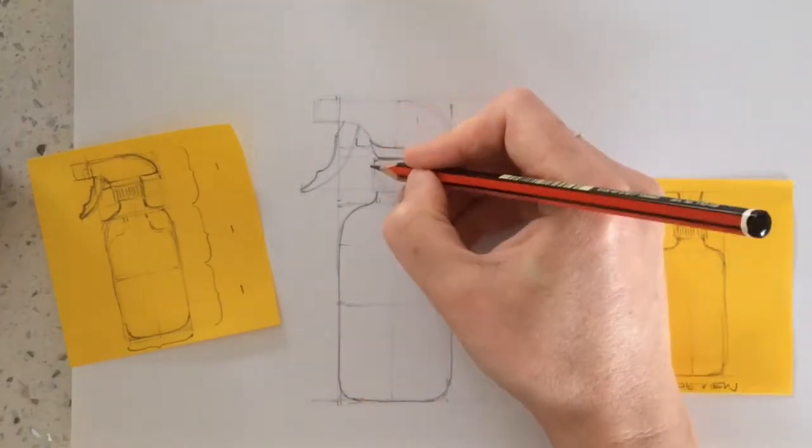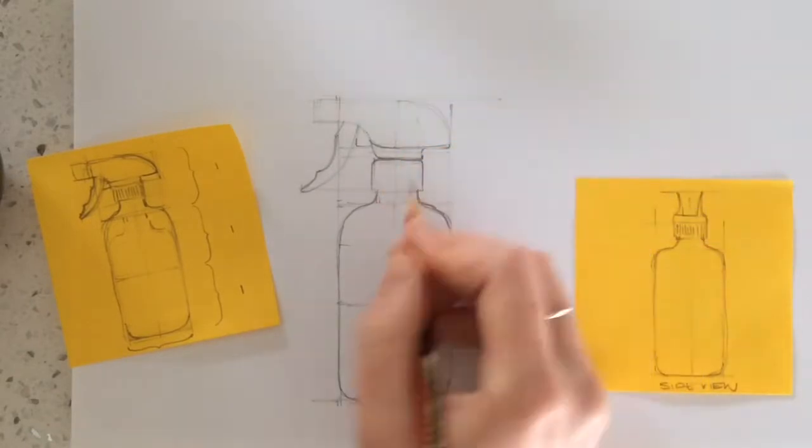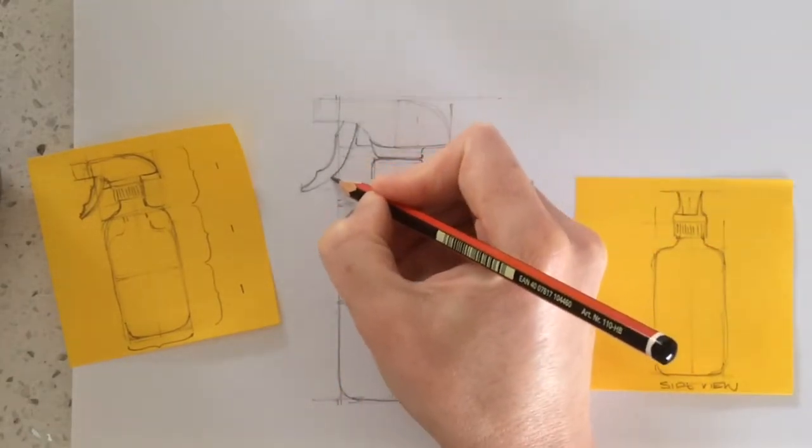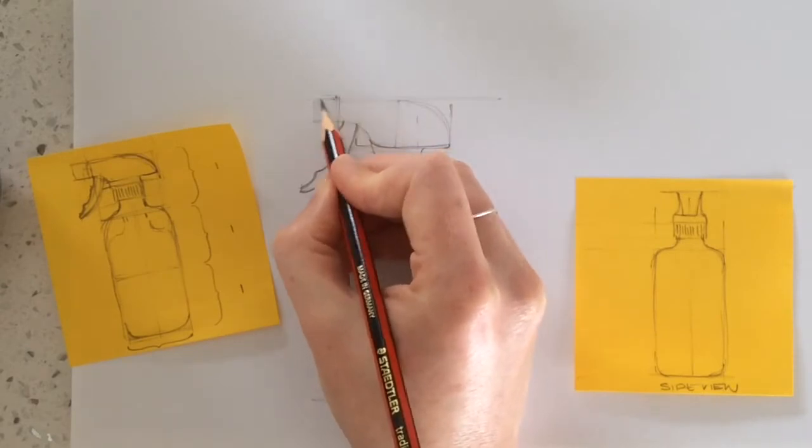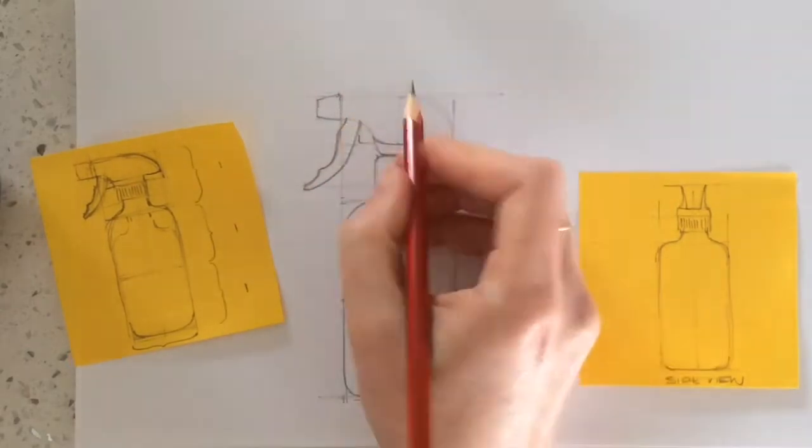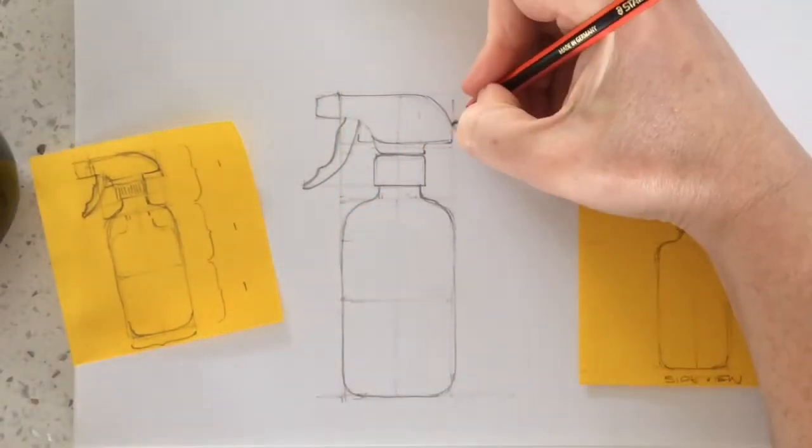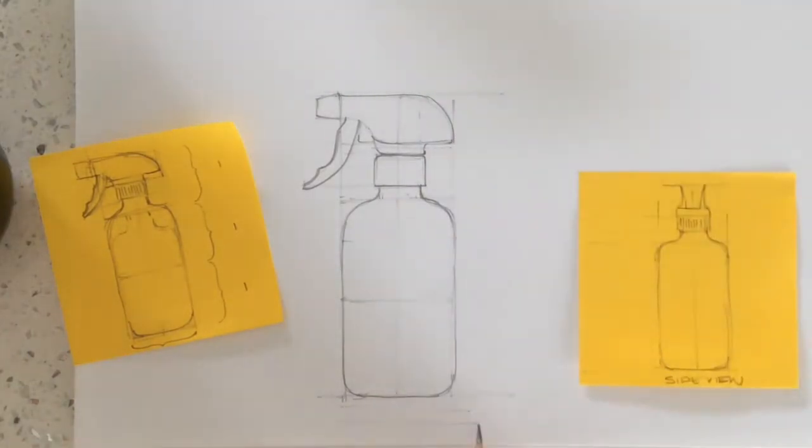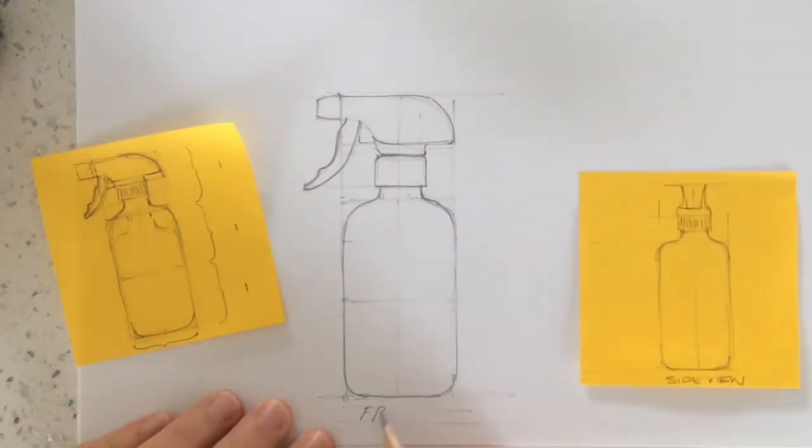Once I'm really happy with all the edges, I can start to go over and have a firm line that confirms the outline, the edge of the different parts or forms. I've got my front view, let's move on to the side view.